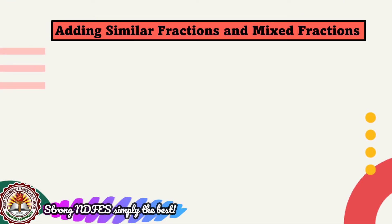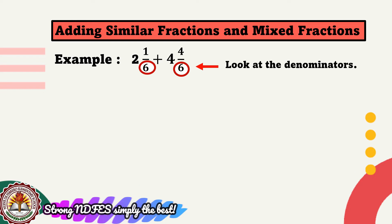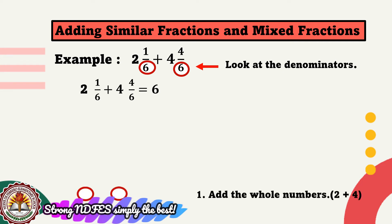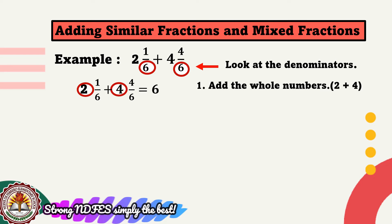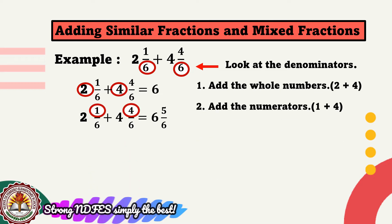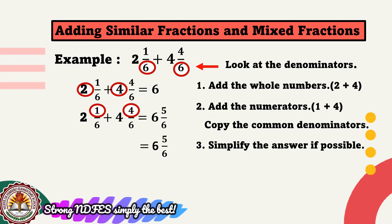Let us have an example of adding similar fractions and mixed fractions. Example: 2 and 1 sixth plus 4 and 4 sixths. The denominators are the same. Step 1, add the whole numbers: 2 plus 4 equals 6. Step 2, add the numerators: 1 plus 4 equals 5. Copy the denominator, which is 6. So our answer is 6 and 5/6. The answer is already in its simplest form.